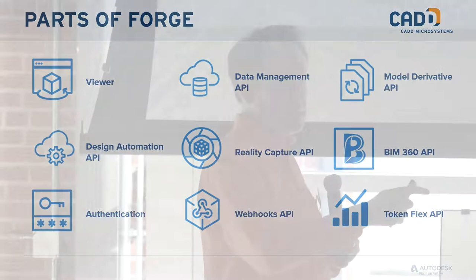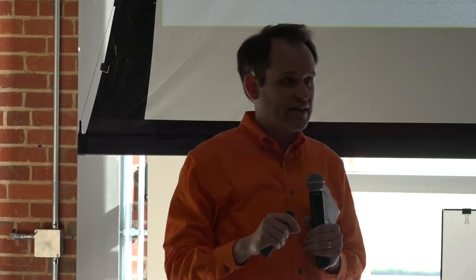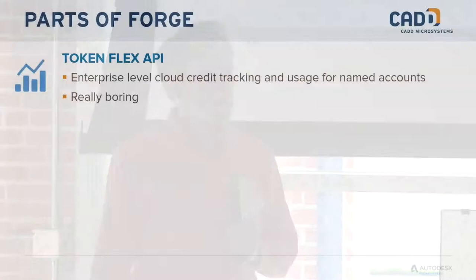Forge consists of nine different APIs with some overlap. I'll quickly touch on each. First is the Token Flex API — it's about enterprise cloud credits. If you have enterprise licensing, it's there, but it's fairly boring. Design Automation is the exciting one most directly applicable to a Revit user group — we'll come back to that.